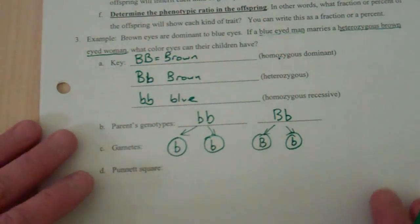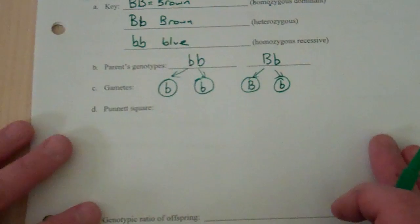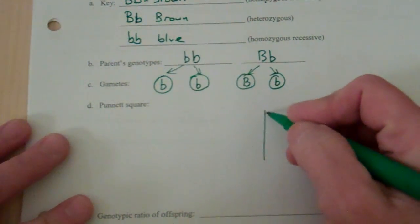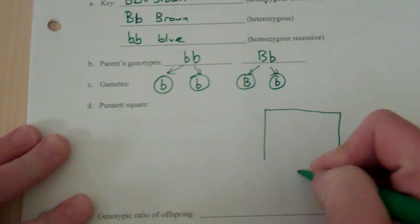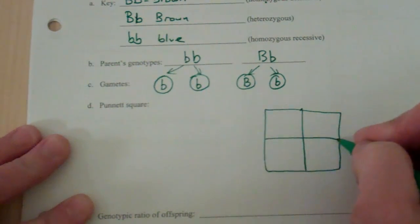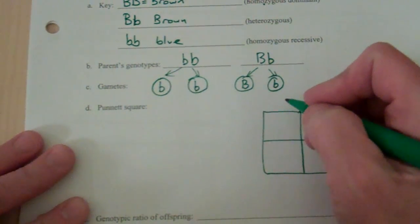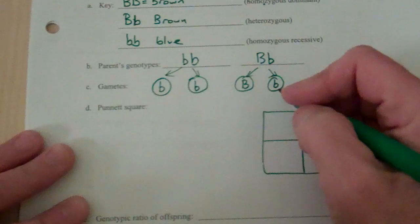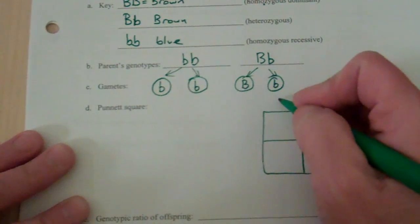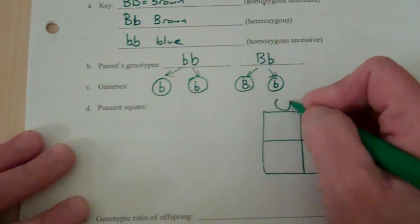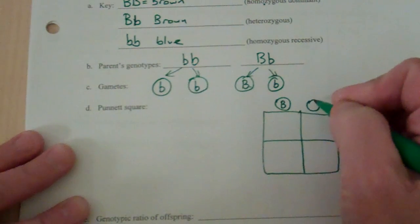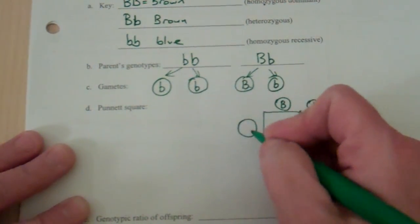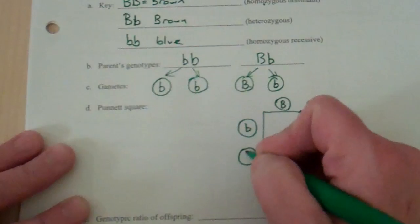Next, you draw a Punnett square, and you're going to place the sex cells on the side and the top. Punnett square is our tool to make predictions about the offspring. Make your Punnett square nice and big. Next, put your gametes or your sex cells up along the top. So I'm going to bring these two down here.